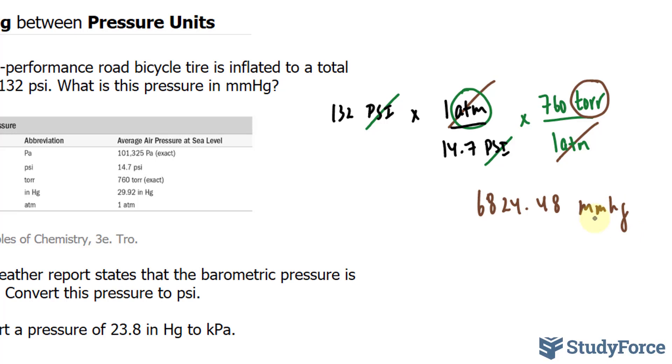Now remember, our number that we started with had 3 significant figures, although this one has many more. It has 6 that we've written so far. So we have to round this to 3 significant figures. That means everything after this 2 is insignificant. Our final answer should be 6,820 mmHg. And if you want to write this in scientific notation, feel free to do that, although this is already 3 significant figures.